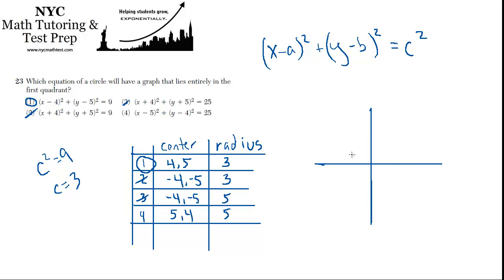With choice 4 centered at (5, 4) and a radius of 5, the circle will extend and just touch the y-axis, but as it goes to the bottom it will dip down into the fourth quadrant. It overlaps and is outside of the first quadrant, so choice 1 is the best answer.